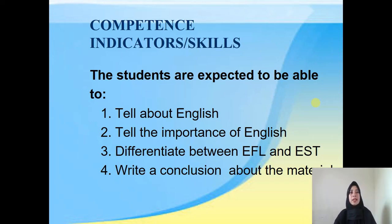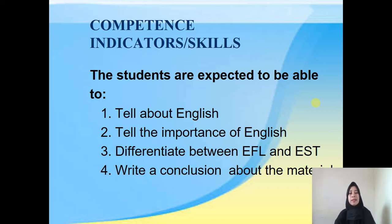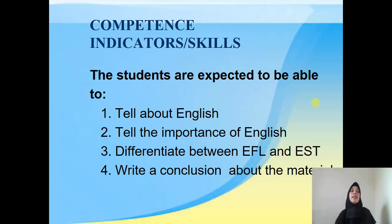Competence indicators or skills: there are four goals of English learning. The students are expected to be able to: number one, tell about English; number two, tell the importance of English; number three, differentiate between EFL and EST; number four, write the conclusion about the material.